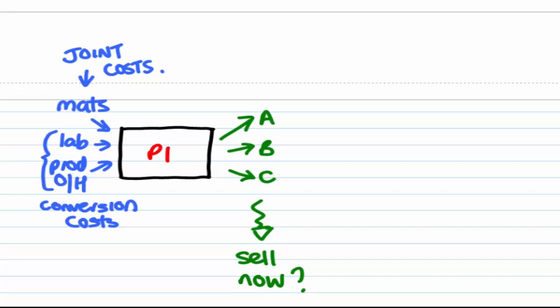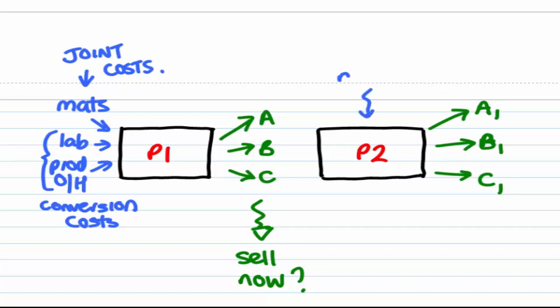However, it might be possible to further process them by doing something else to them. Let's call that process 2 and make them into products that are slightly different that we can then sell for more. So we'll call those A1, B1, and C1. Now we'll put some more cost in here, maybe some more materials go into the process.